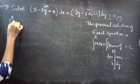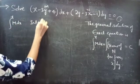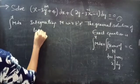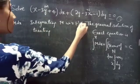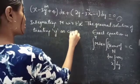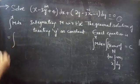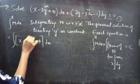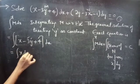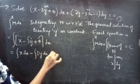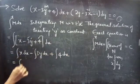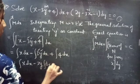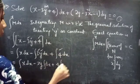Let's consider the first integral: the integral over x of M dx. That is, we are going to integrate M with respect to x treating y as constant. For M equals to x minus 3y plus 4, here 3y and 4 are constants: integral of x dx minus 3y times integral dx plus 4 times integral dx.